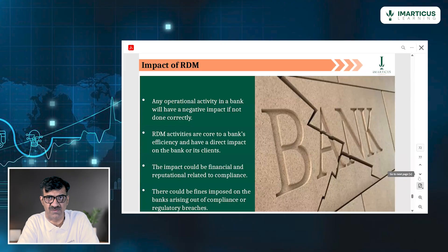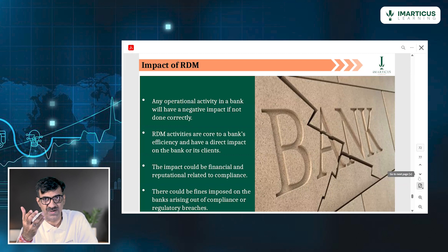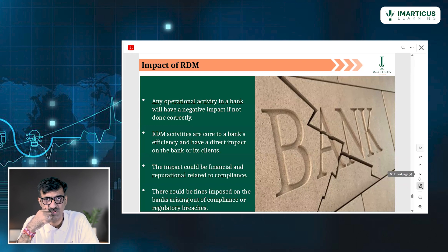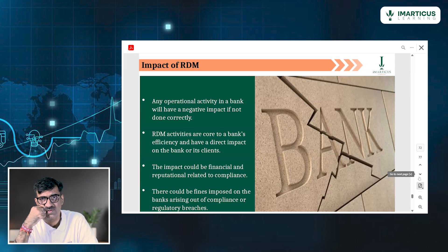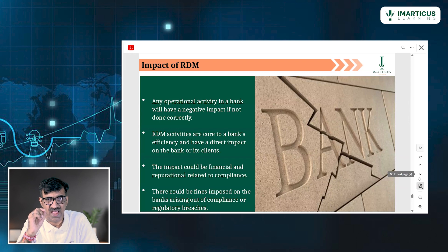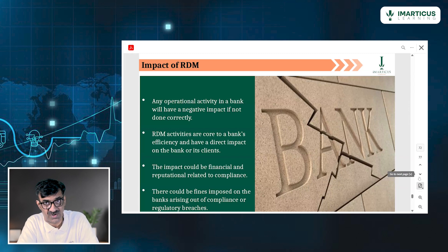Any operational activity in a bank where things are not done correctly will have a negative impact. People have anger in their eyes when they talk about New India Cooperative Bank, Punjab Maharashtra Bank, Bank of Karaj, and Global Trust Bank — because trust was broken. Money has a lot to do with trust. RDM activities are core to every bank. They bring in trust, confidence, goodwill, and of course, a lot of business.